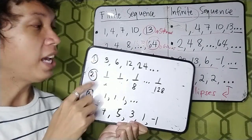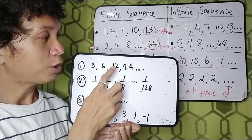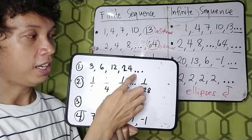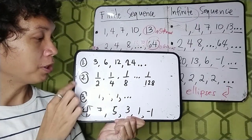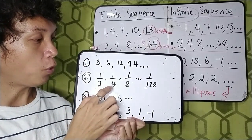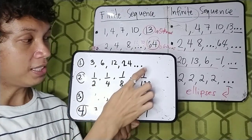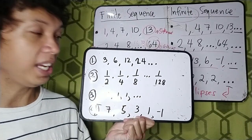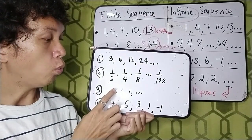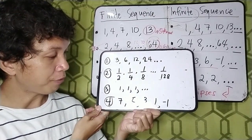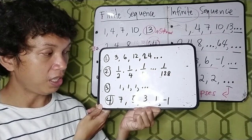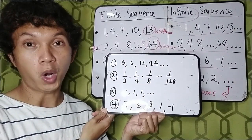So number 1, we have 3, 6, 12, 24, and then ellipses. Number 2, 1 half, 1 fourth, 1 eighth, ellipses, and then 1 over 128. Number 3, 1, 1, 1, and then ellipses. And then number 4, 7, 5, 3, 1, negative 1.